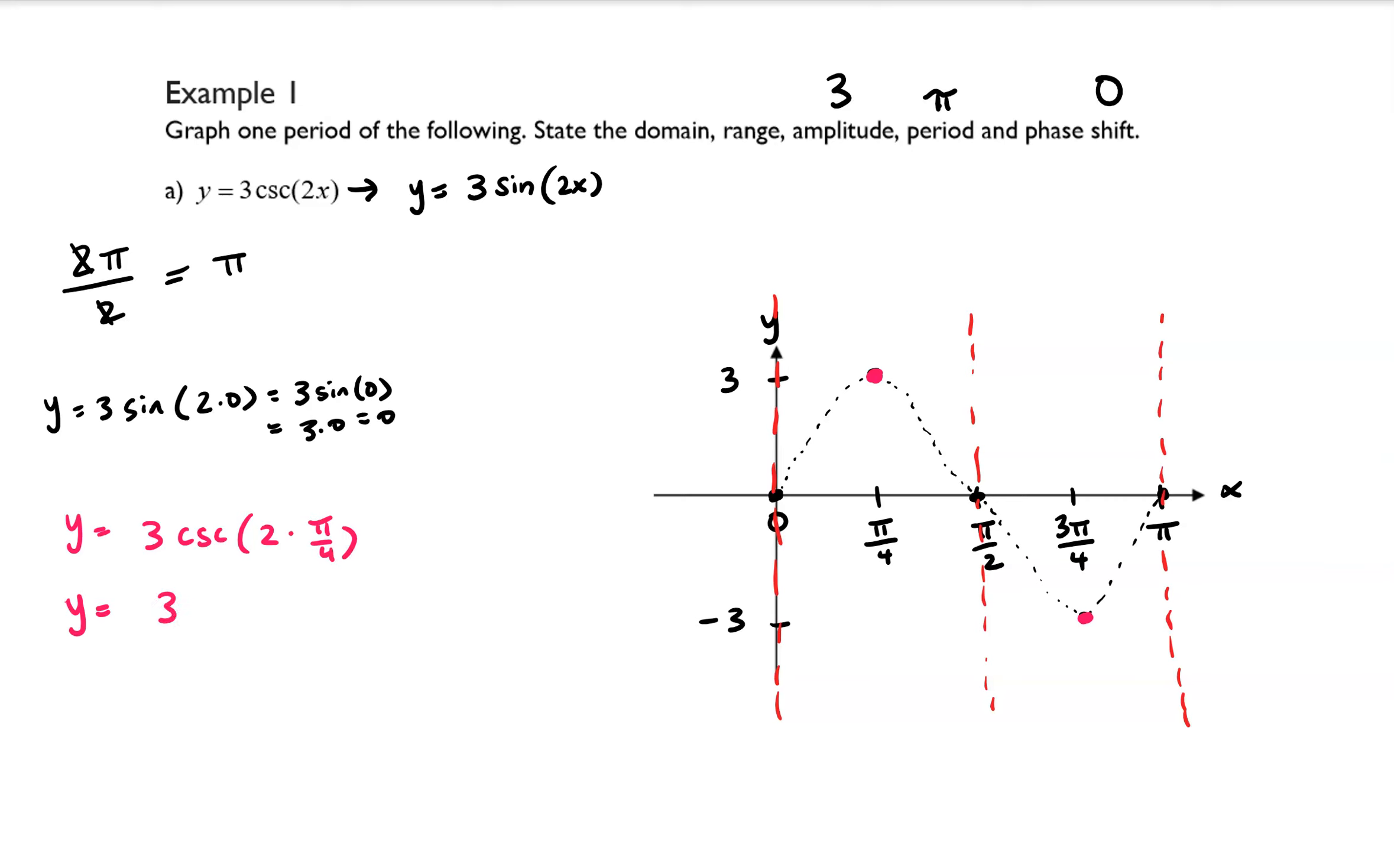So that's going to be equal to 3 times cosecant of 2 times pi over 4 is going to simplify to pi over 2, and then using the reciprocal identity, that's equal to 3 times 1 over sine of pi over 2. And I know that sine of pi over 2 is equal to 1, so that is going to simplify to 3.